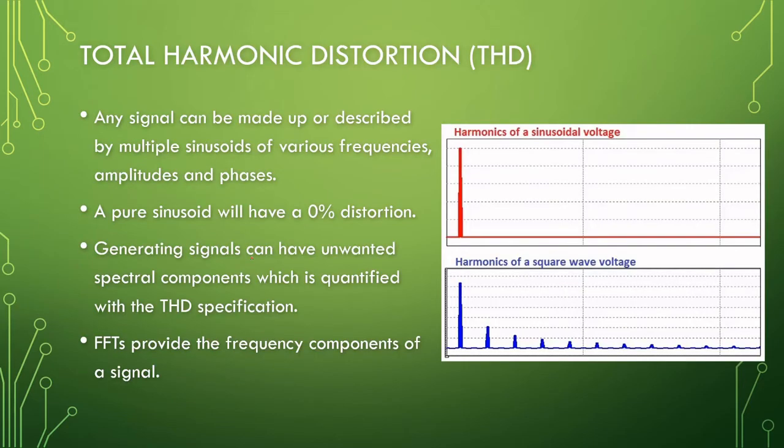So any signal can be broken up into different frequencies of different amplitudes and phases. A perfect sinusoid will be one peak on FFT.